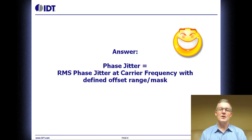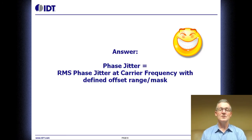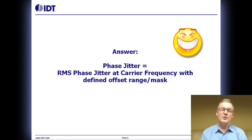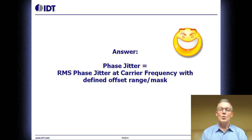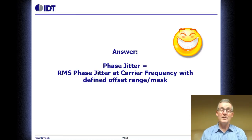So now let's answer our question: what is phase jitter? It's a little complicated, but not too involved. When people ask about phase jitter, they're asking: what is your RMS phase jitter? To come up with RMS phase jitter, we need to know what the carrier frequency or operating frequency is, and we also need a well-defined offset range or jitter mask so we can integrate the area under the curve in the phase noise plot and arrive at a number specific to the engineer's application.